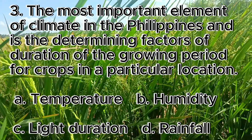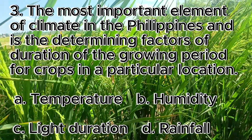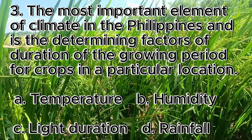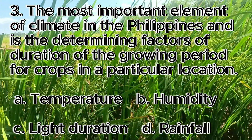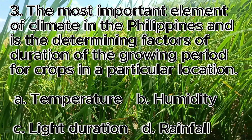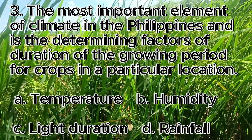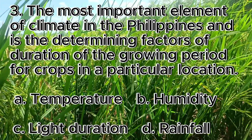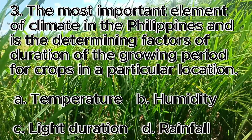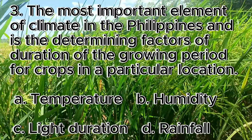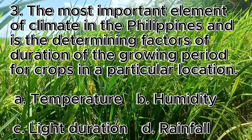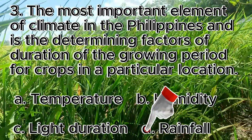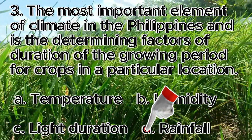Number 3. The most important element of climate in the Philippines and the determining factor of duration of the growing period for crops in a particular location. A. Temperature, B. Humidity, C. Light Duration, D. Rainfall. The answer is letter D, rainfall.